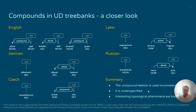In summary, the compound relation is not used consistently at this moment, and it is underspecified — for instance, stonewall and emerald green dependencies are both treated as compounds, though it could be argued that they represent a different type of syntactic relationship. And interesting typological phenomena are lost, such as this inversion situation.